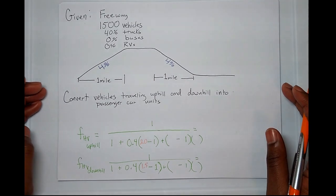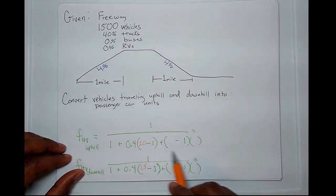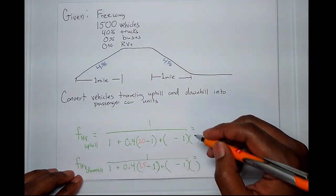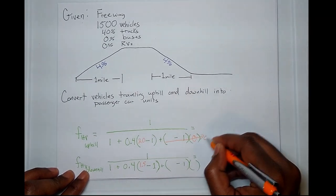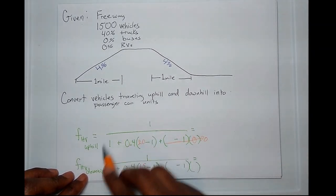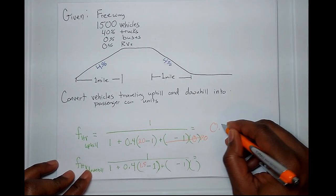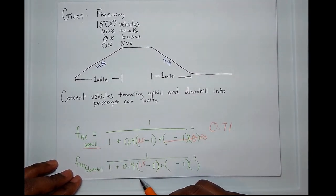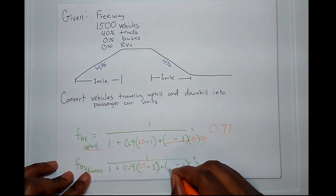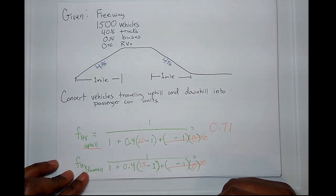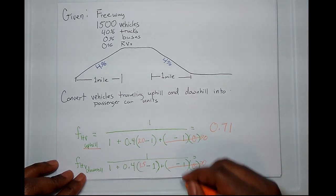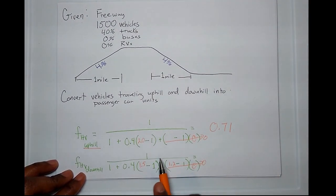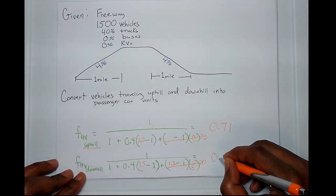Now here are all the values filled in. For the heavy vehicle factor going uphill, I put in the 2.0 found from the tables. Since there are zero RV type vehicles, that whole part of the equation goes to zero. Calculating it out, the heavy vehicle factor going uphill equals 0.71. For downhill, using 1.5 from the tables, and again zero RVs — and recall that RVs downhill always use 1.2 — the heavy vehicle factor going downhill equals 0.83.